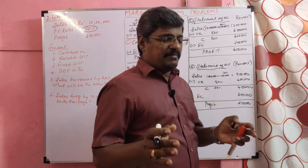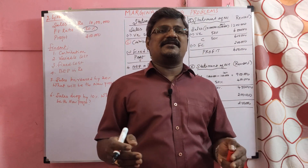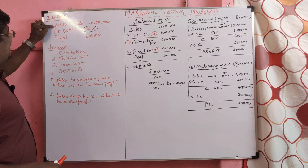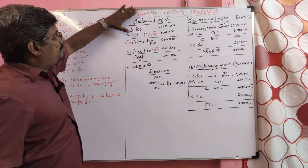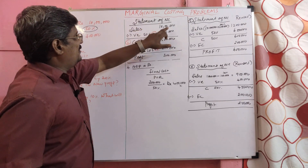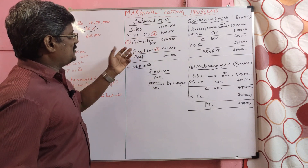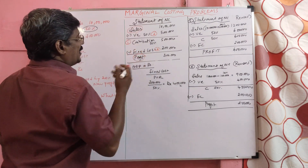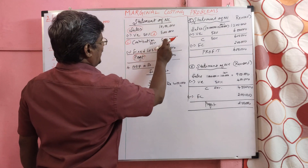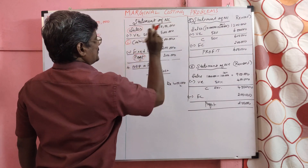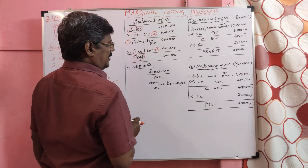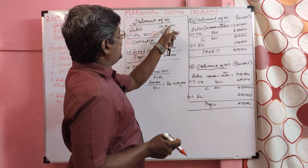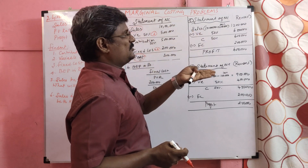Once again — sales, PVR, and profit are given. Before solving the problem, prepare the statement of marginal costing. Sales given 10 lakh. Variable cost, contribution, and fixed cost not given. They gave sales, profit, and PVR. Contribution is nothing but PVR — so 10 lakh into 50% equals 5 lakh. Variable cost is the remaining 50%. Then BEP = fixed cost divided by PVR. For the sales increase scenario: existing sales 10 lakh increased by 20% gives 2 lakh increase, so new sales is 12 lakh.